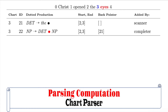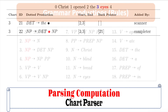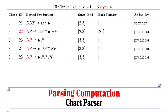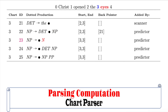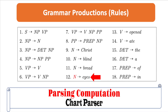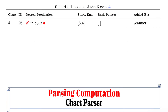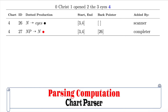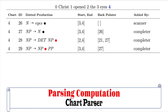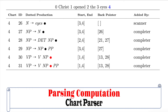Since DET has been completed, we can now shift the dot to the right of DET for the production found in ID number 19 of chart 2. Let's process ID number 22 of chart 3. Since the dot is to the left of NP, we need to add all NP productions to chart 3. For ID number 23 of chart 3, the dot is to the left of N, and N is a part-of-speech category, so it will scan the grammar to check whether or not the input word is found. Since there is a match for the noun, we can now move the dot to the right of N and complete the NP production. We can now shift the dot to the right of NP of chart 3, and also shift the dot to the right of NP of chart 2, because NP has been completed.